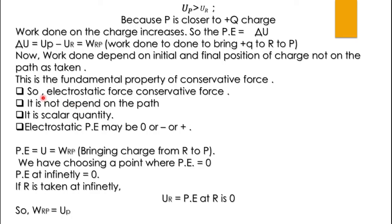So the results for electrostatic force: it is a conservative force, it does not depend upon the path, it is a scalar quantity, and it may be zero, negative, or positive. Now we see that for bringing the plus charge from P to R, we choose a point where potential energy is zero. That point is at infinity — potential energy at infinity is zero.